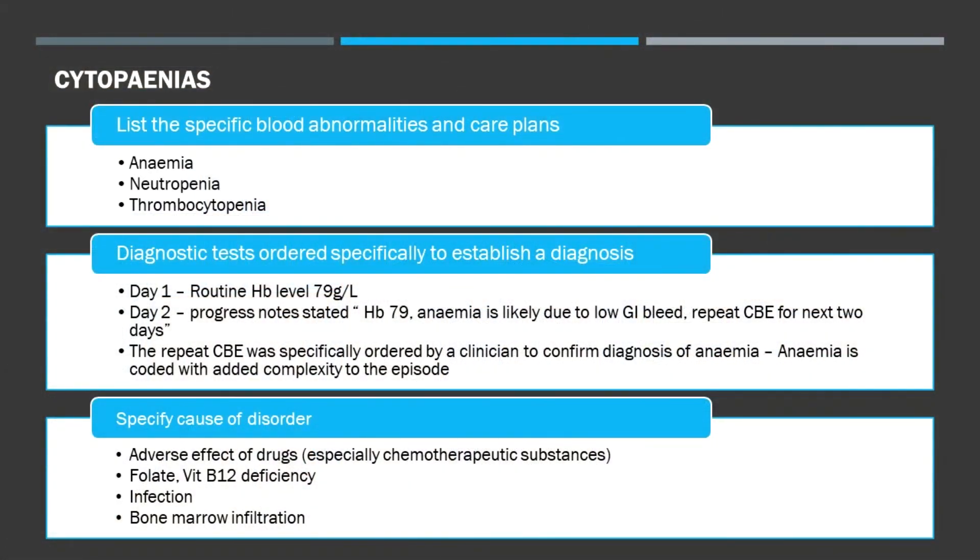In terms of cytopenias, you need to be very specific. Pancytopenia and bi-cytopenia do not code at all — you need to be specific. So if someone has a pancytopenia without one major diagnosis — for example, someone admitted with acute myeloid leukaemia where that would be the diagnostic group rather than pancytopenia — but if they're being investigated for pancytopenia, please do not use that term. Use the terms anaemia, thrombocytopenia, or leukopenia at least somewhere in the notes, so that those can be coded as individual items that add complexity.